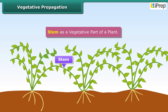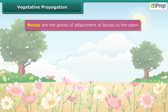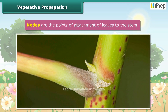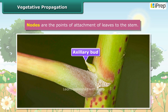Stem is a vegetative part of a plant. Have you ever seen buds at the nodes of the stem? These buds are called axillary buds. These buds do not produce flowers; rather, they give rise to new branches.